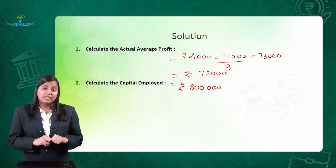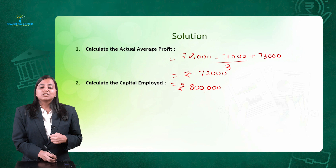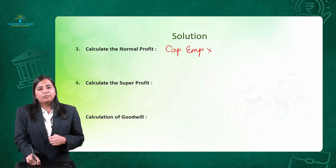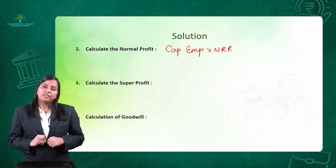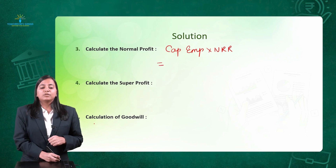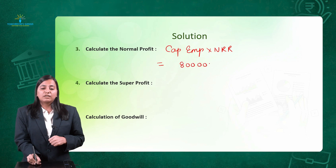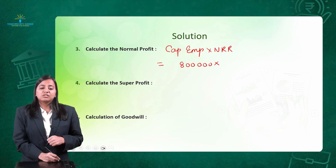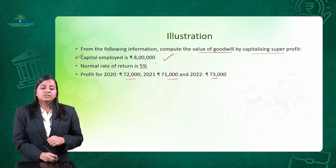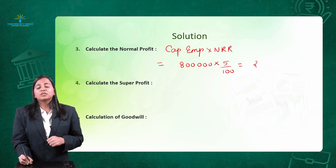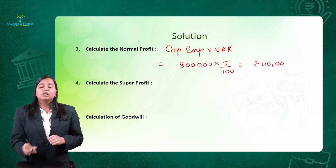Step number 3: calculation of normal profit, given by the formula capital employed multiplied by normal rate of return. Capital employed from step 2 is rupees 8 lakhs, and normal rate of return from the question is 5%. So 8 lakhs multiplied by 5% gives us rupees 40,000 as normal profit.